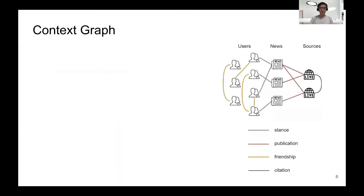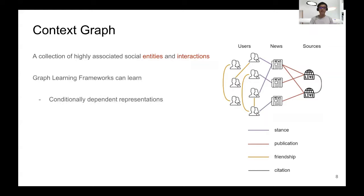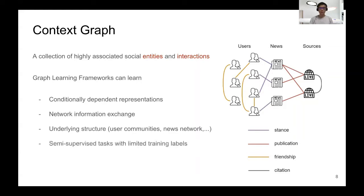Although there are many choices for social context representations, we decided to choose a graphical representation because the social context is inherently a collection of highly associated social entities and interactions. By applying graph learning frameworks, we can learn a conditionally dependent representation, enable network information exchange, and also model the underlying structure that is unique to the social context, such as user communities and news networks. We can also formulate the problem as a semi-supervised task, which is very robust in limited training label settings.